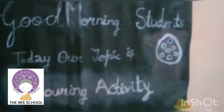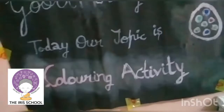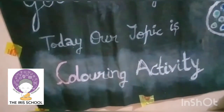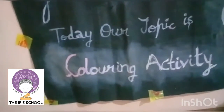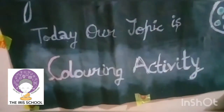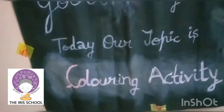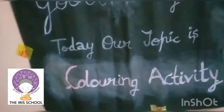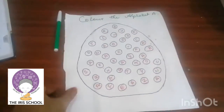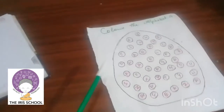Good morning students. Today our topic is a coloring activity. I'm going to teach you this coloring activity — it is a very simple activity that you can do by staying at home. In this activity, the child has to color a circle in which the alphabet A is written. For doing this activity, I am having one sheet and one color sketch.